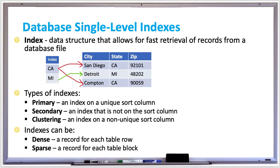Indexing is a data structure technique which allows you to quickly retrieve records from a database file. A single level index is a file containing values for a single column, typically a primary key, which points to the row that matches up to the column value.